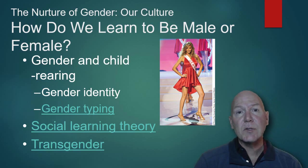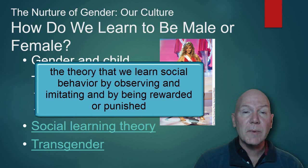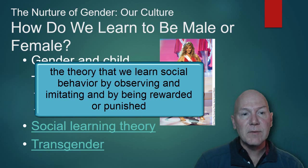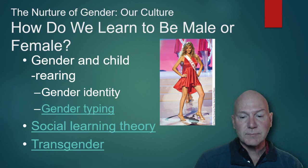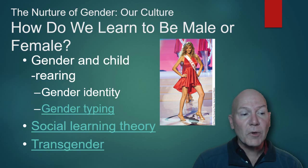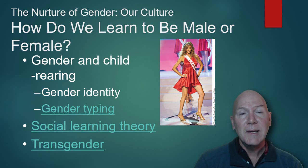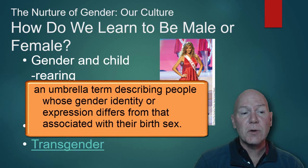Social learning theory explains this through observing others — seeing how boys act and how girls act, or whichever gender you identify with. Operant conditioning also plays a role: if a behavior is punished or reinforced, you're likely to continue or discontinue that behavior.